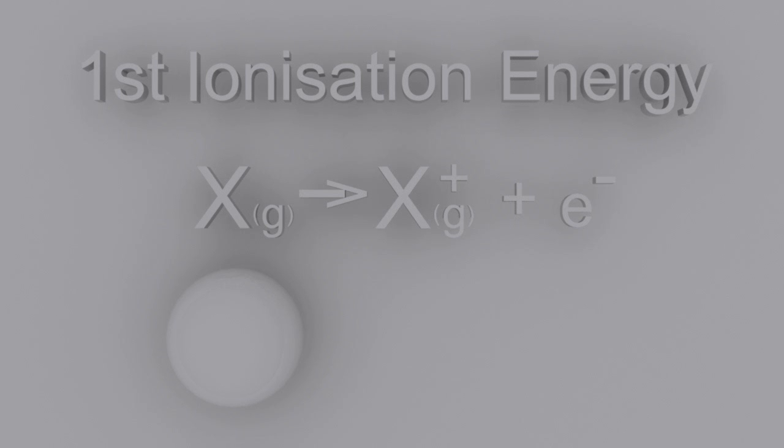Let's look at some periodicity definitions. The first ionization energy is the energy required to remove an electron from a gaseous atom. Now you can say it's the energy required to remove a mole of electrons from a mole of gaseous atoms, leaving a mole of gaseous monopositive ions, but almost certainly you want to stick with the first definition, removing an electron from a gaseous atom.